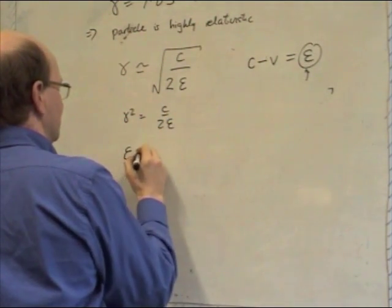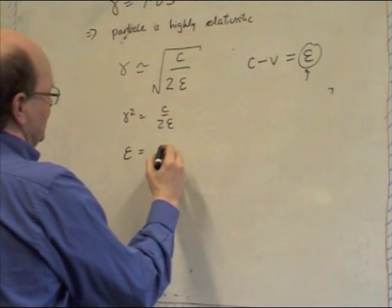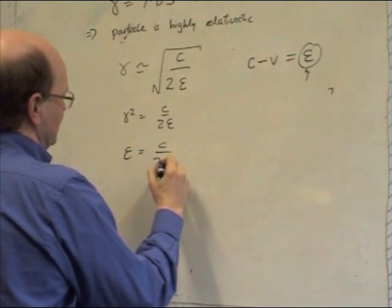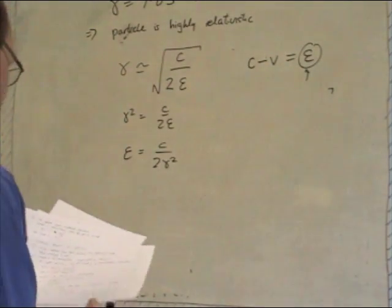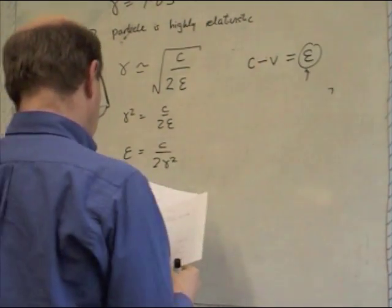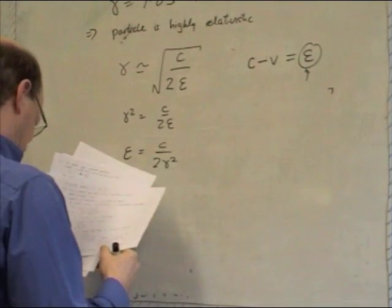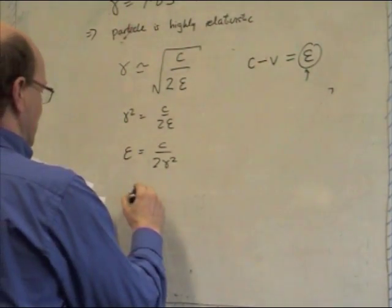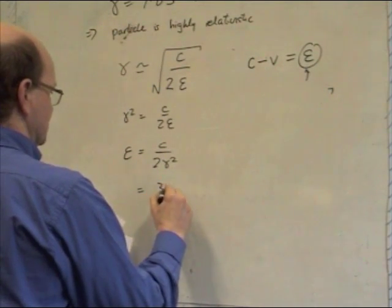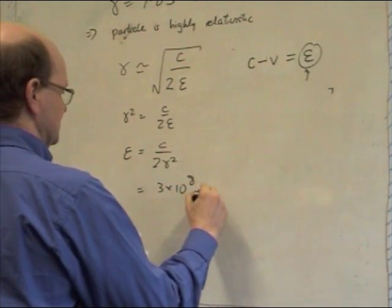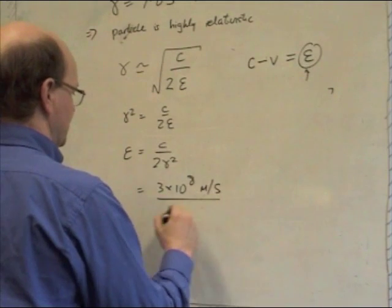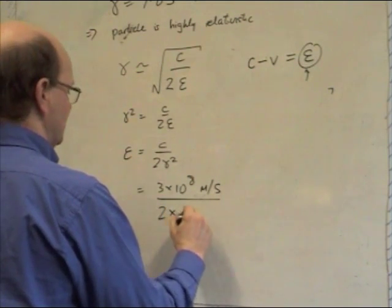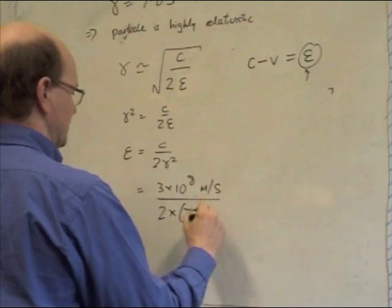Which means that gamma squared equals c upon 2 epsilon. Or epsilon, the thing we're trying to calculate, is c upon 2 gamma squared. Right? And so you're substituting numbers at this point.